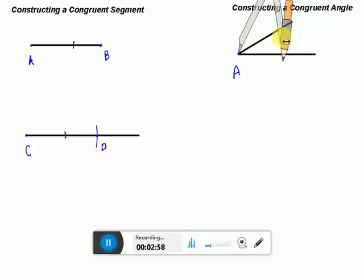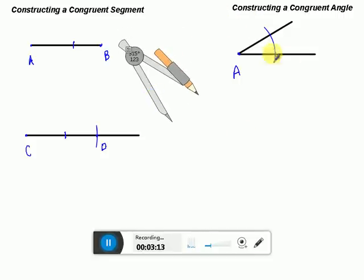Choose any radius you want. It doesn't matter what it is. You can make it big, you can make it small, it doesn't really matter. But then you're just going to make an arc with it all the way through so that it crosses both sides of that angle. And then let's go ahead and label this B and C.